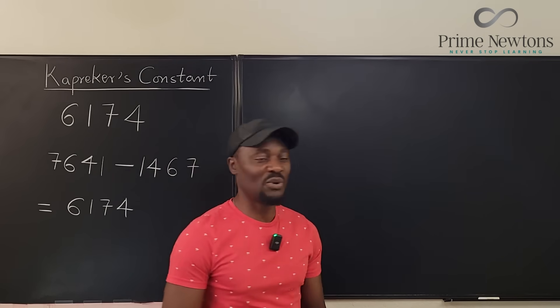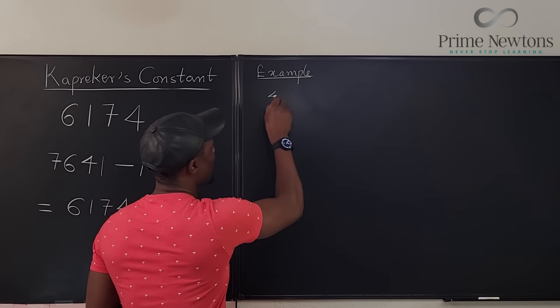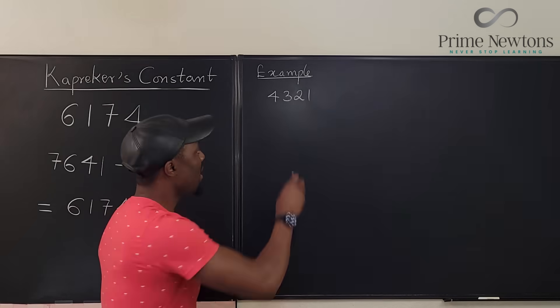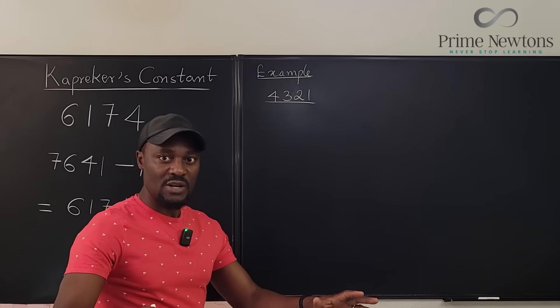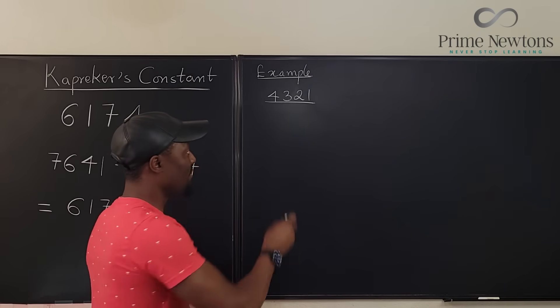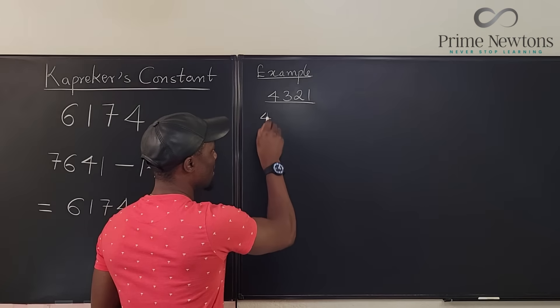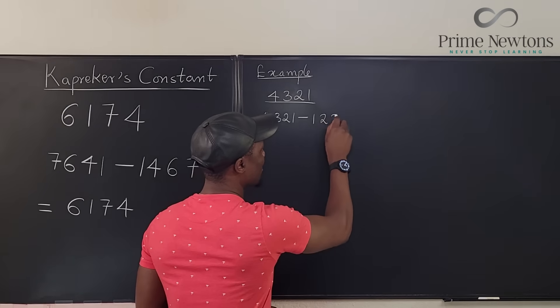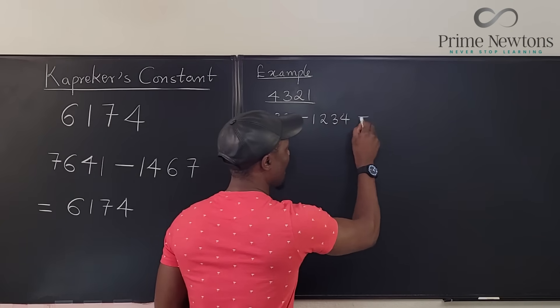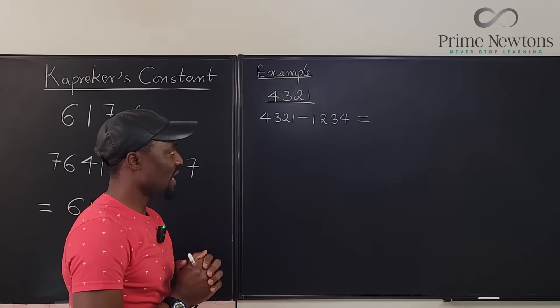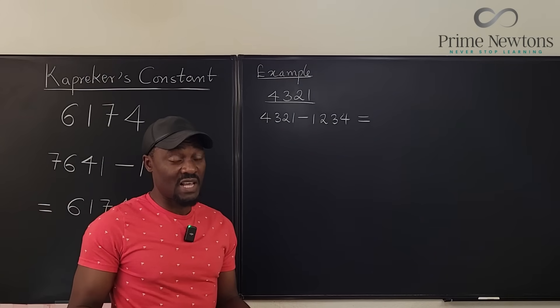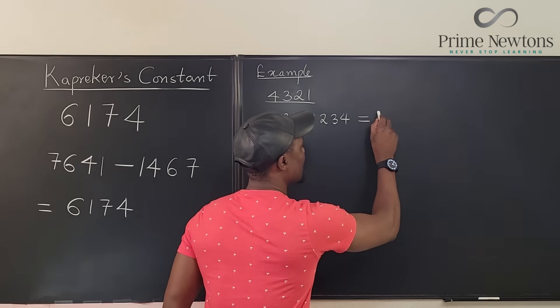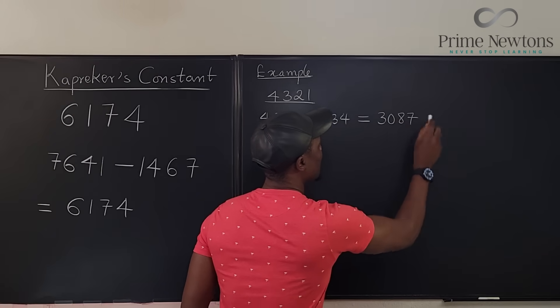So let's take a good example. Let's take 4,321. Let's say we want to start with 4,321. That's our number. So the first iteration of this calculation will be the biggest possible number formed with these digits will be 4,321 minus 1,234. If I do this calculation, what am I supposed to get? Well, because I don't want to make a mistake, I'm just going to use my calculator. I get 3,087.